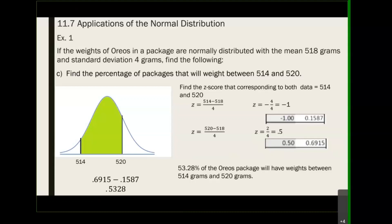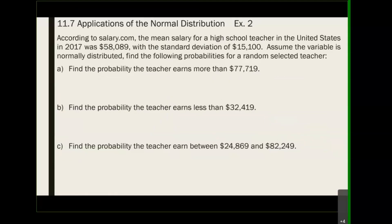Let's take a look at Example 2. I just threw big numbers at you to let you know the data can change, but the steps and procedure are the same. According to salary.com, the mean salary for a high school teacher in the United States in 2017 was $58,089 with a standard deviation of $15,100. Assume the variable — salary — is normally distributed.